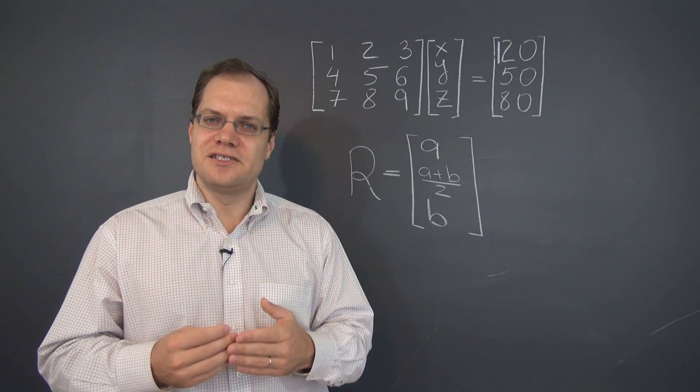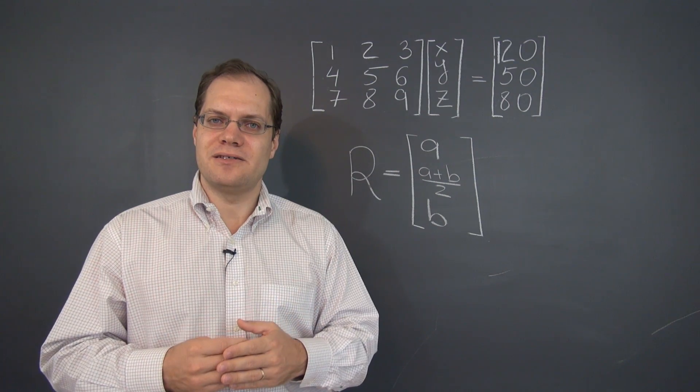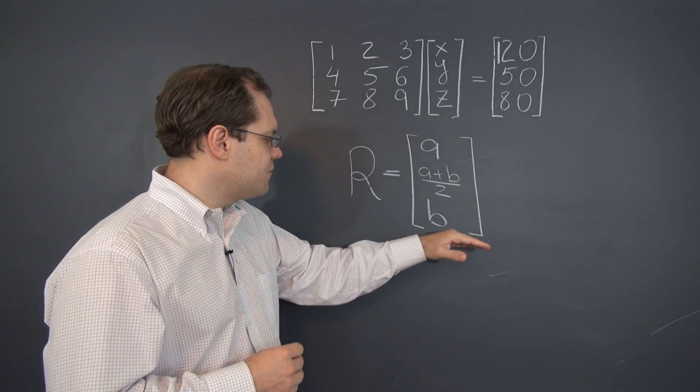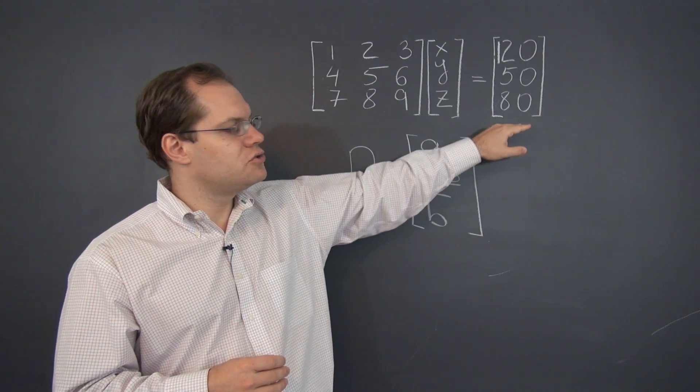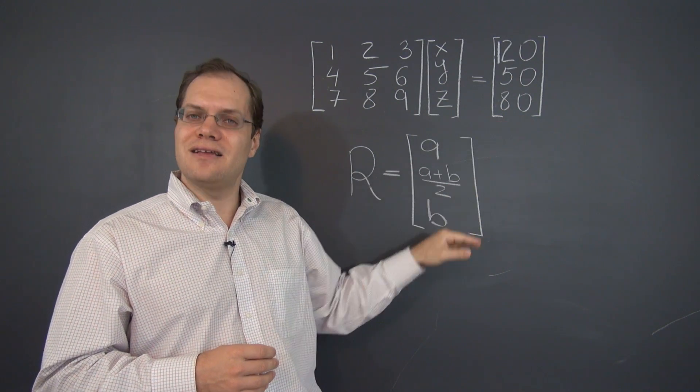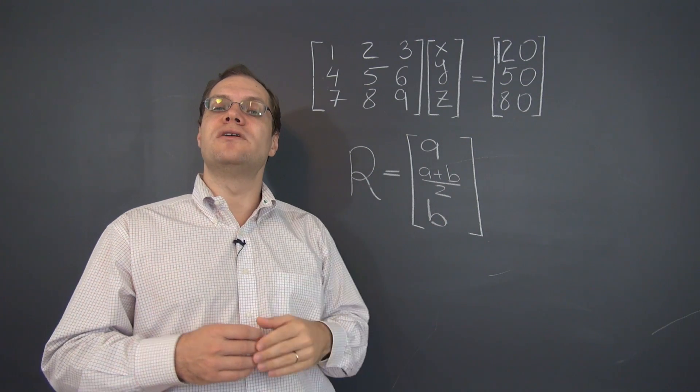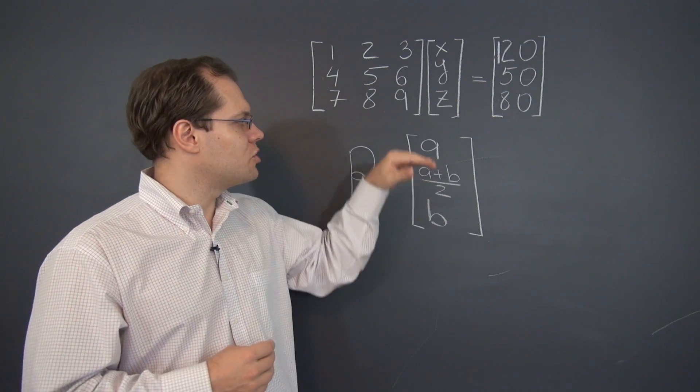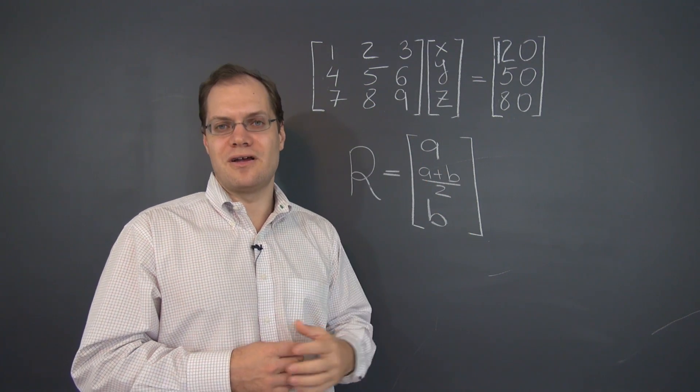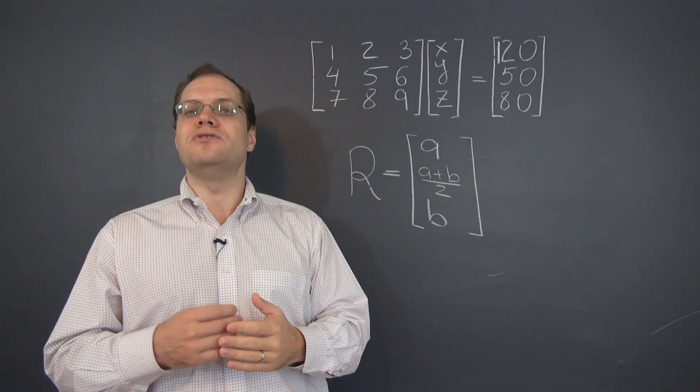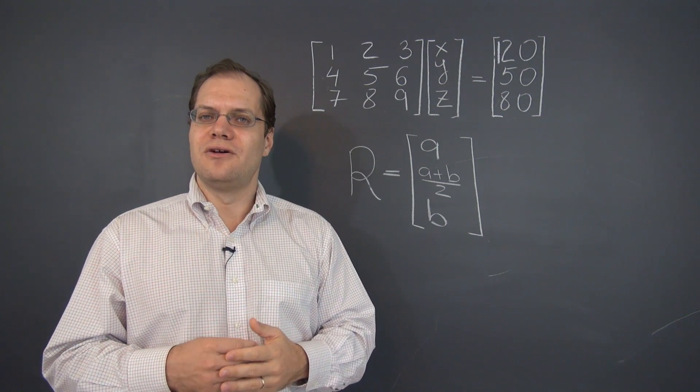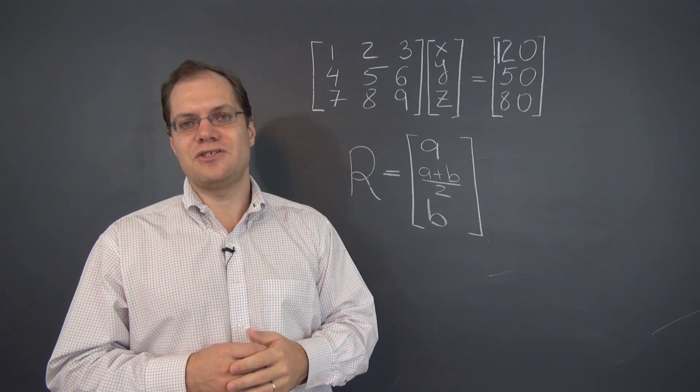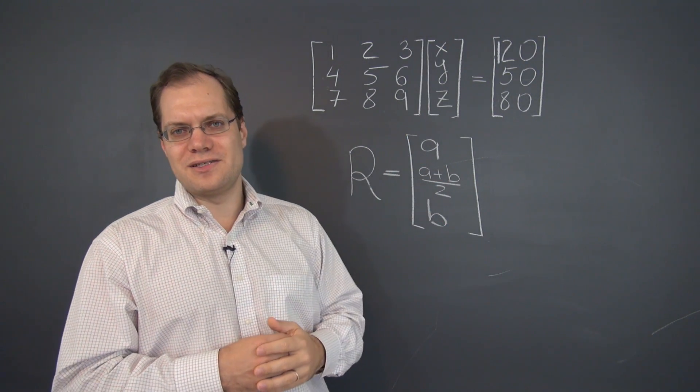So we now see that both the null space and the column space are critical when solving linear systems. You would identify the column space in order to determine whether the right-hand side is in the column space and, in other words, whether the system has a solution in the first place. And you would determine the null space because it is an integral part of the general solution which always equals a particular solution which is just one way to get the right-hand side plus the null space. So we learned quite a bit from the system.